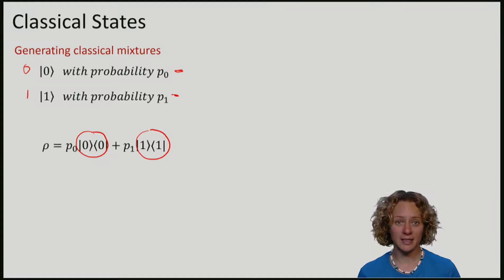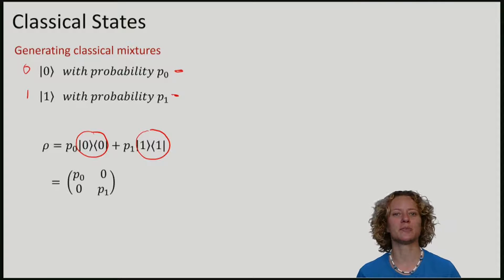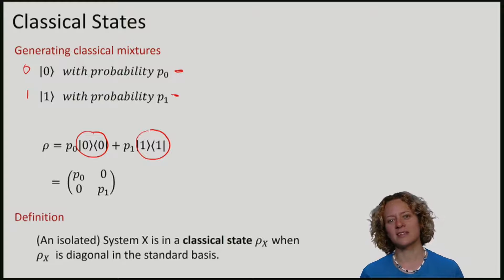And we see what we get is a matrix that on the diagonal has the probabilities. You can think a classical density matrix as being a matrix that is diagonal in the standard basis, where we just list the probabilities on the diagonal.